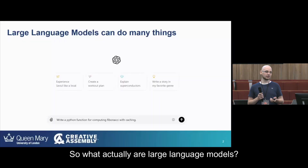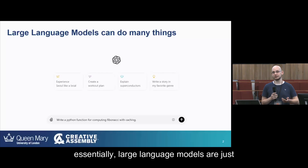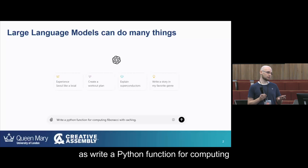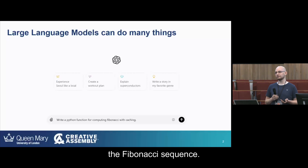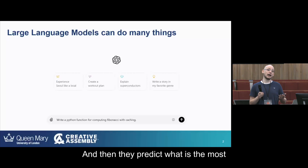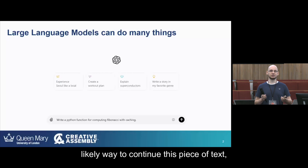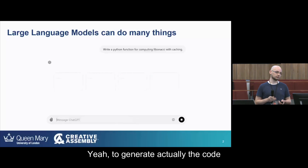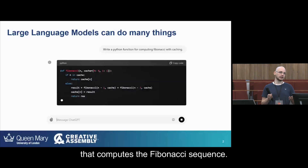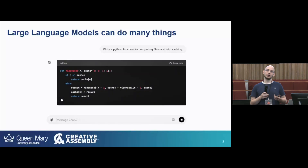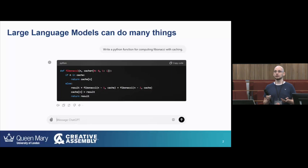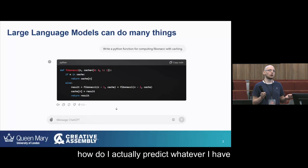So what actually are large language models? Essentially, large language models are just text predictors. They take as input some piece of text, such as 'write a Python function for computing the Fibonacci sequence,' and then they predict what is the most likely way to continue this piece of text — which in this case is to generate the code that computes the Fibonacci sequence. That's the basic idea behind large language models. They have been trained on a huge amount of data, and they just learn how to predict whatever they have to predict.